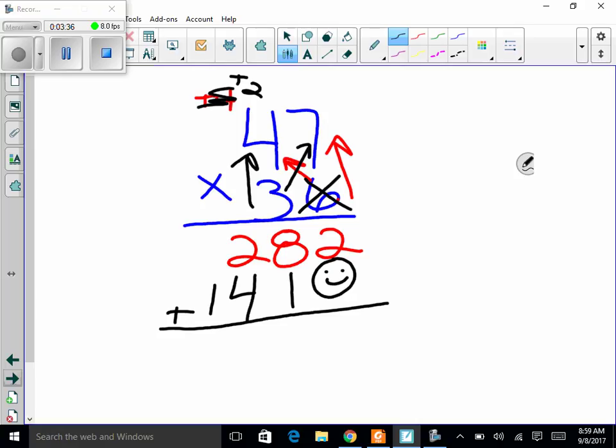Make sure that these numbers are lined up or you're going to get the problem wrong. Two, nine, six, and one. That's 1692. So 47 times 36 is 1692. As you can see, I'm actually moving through these pretty quickly, so this is why people like to do this type of problem.